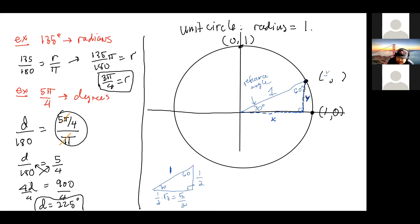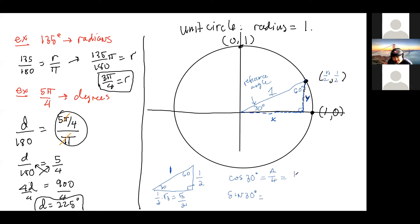So this coordinate is root three over two comma one half. What's the cosine of 30 degrees in this case? And what is the sine of 30 degrees? If we use the unit circle: cosine is the adjacent over hypotenuse — root three over two; sine is one half.